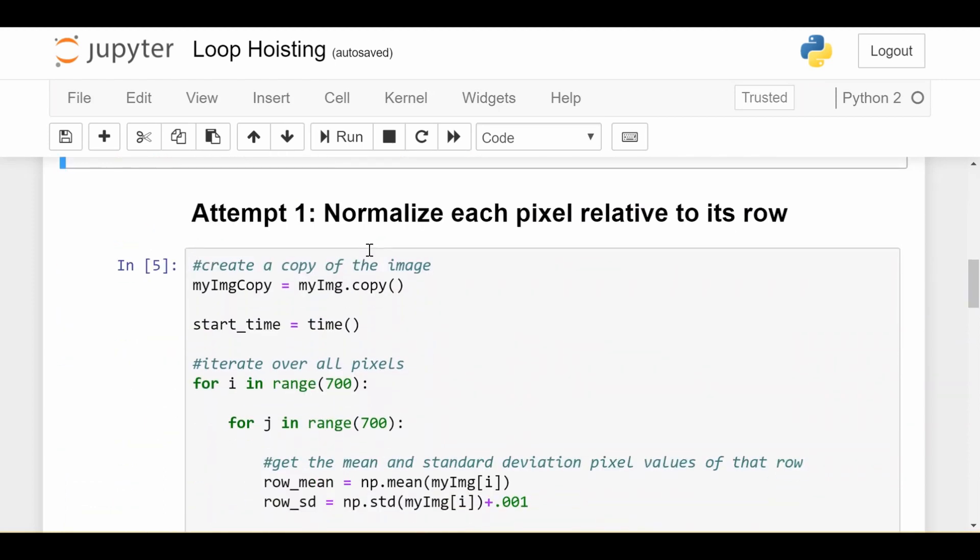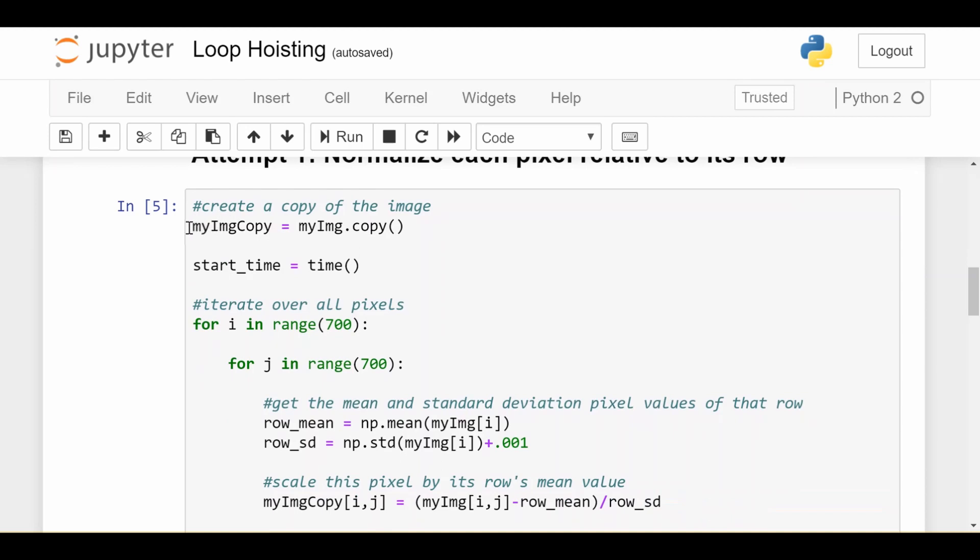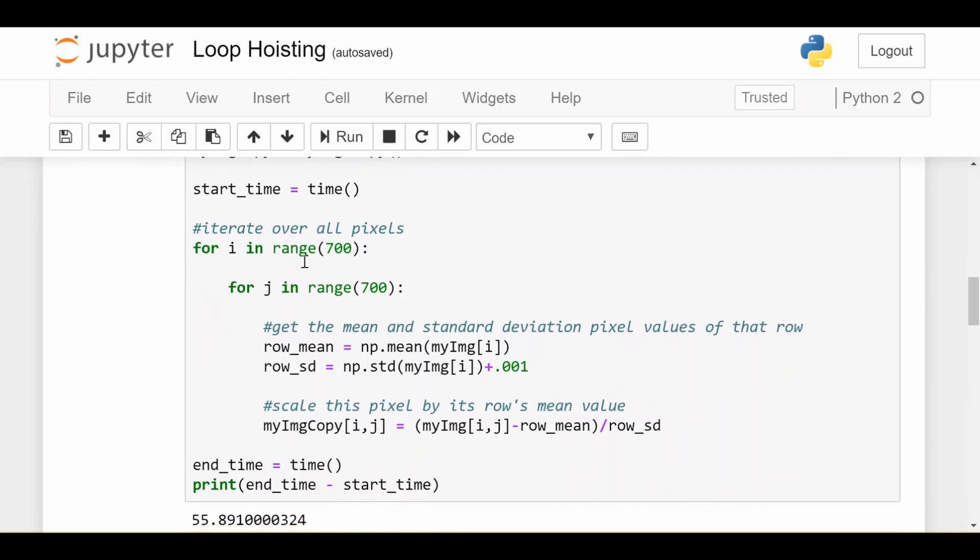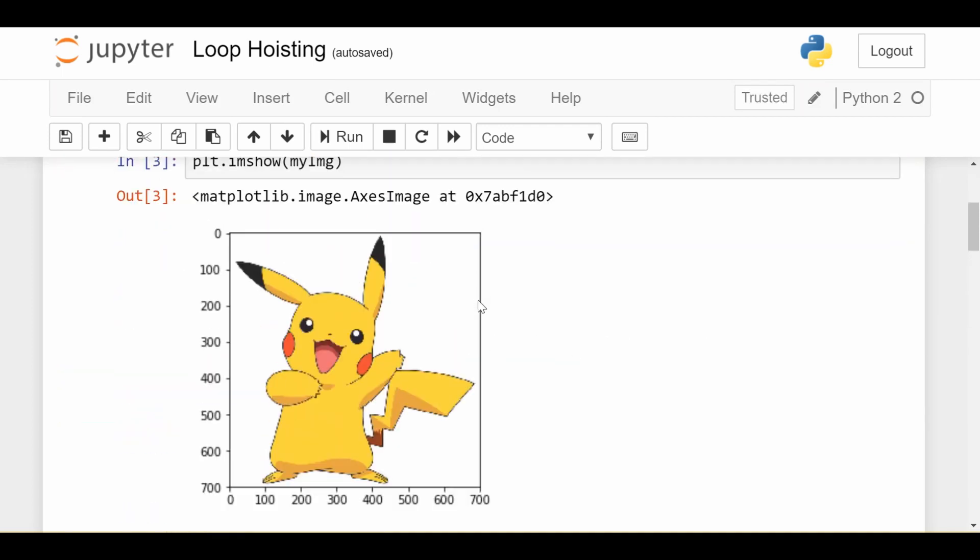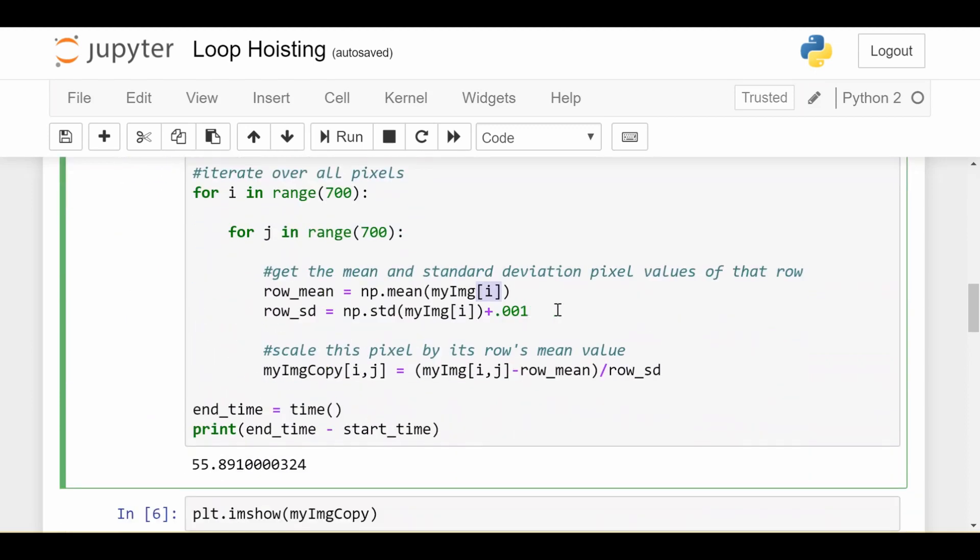So attempt one. Remember, we're trying to normalize each pixel relative to its row. So we go ahead and create a copy of this image so we don't act on the original one. We start the timer. And we see this double for loop as we did before. So for i in range 700, going over all the rows, going over all the columns with our j in range 700, we get the mean and standard deviation pixel values of that row. So we get row mean is equal to the mean of this row's pixels. So my img with the subscript i means give me the entire row. So that's 700 pixels of any given row in the image. We get the mean of that row's pixels. We also get the standard deviation of that row's pixels.